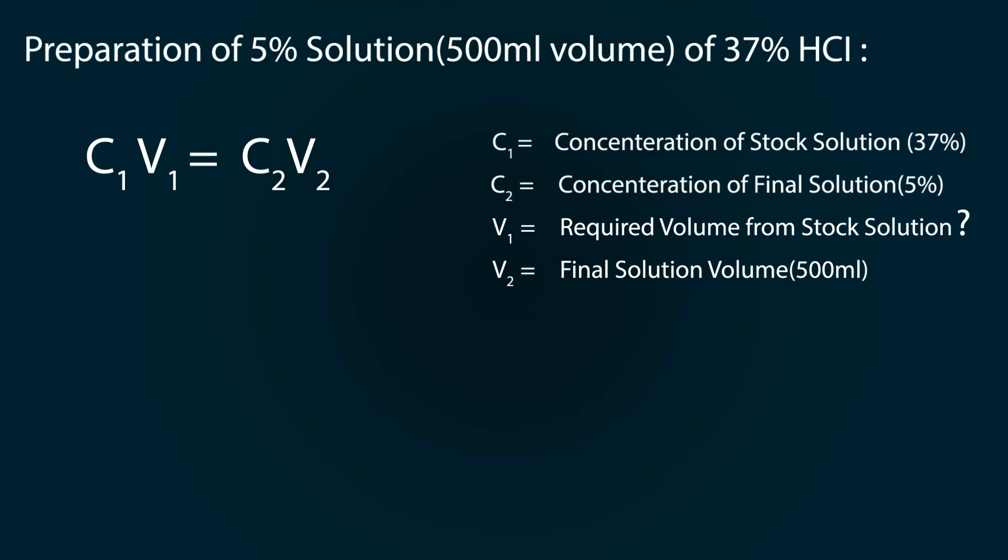So let's start our calculations. V₁ = C₂V₂ / C₁. Now put the values as 5% × 500ml / 37%.